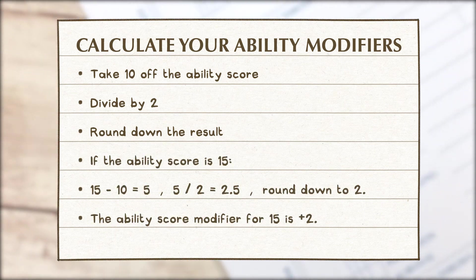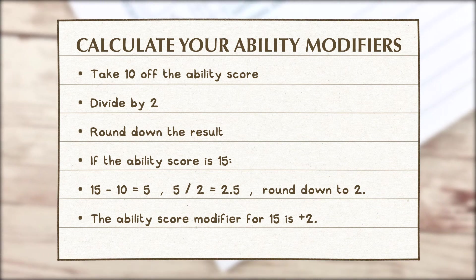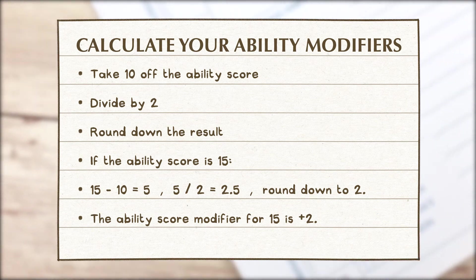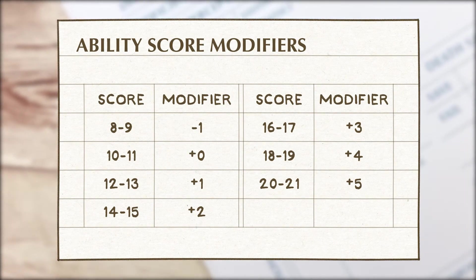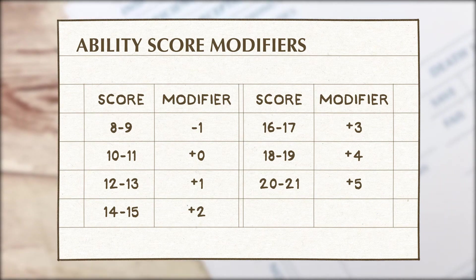So 15 minus 10 is 5 divided by 2 is 2.5 and then rounded down is 2. So the modifier is plus 2. If you don't want to calculate these use this table instead which lists what each modifier is for each ability score.